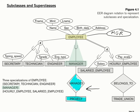To recap, the reason we subclass in the first place is because we either have unique attributes of the subclasses, or because the subclass engages in a unique relationship. This breaks down our employee EER diagram, and hopefully explains some of the key concepts in EER diagramming. We'll talk about a few more in upcoming videos.